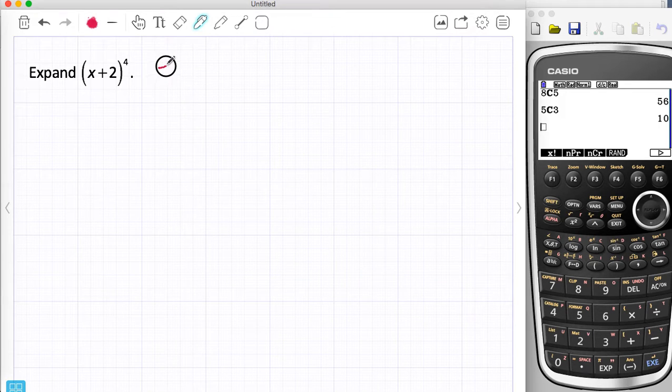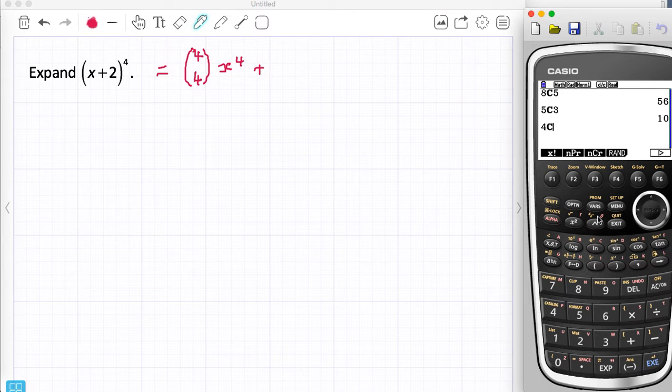So because I know that there's going to be, this is 4, there's going to be 5 terms. The first term is x to the power of 4. Now what I haven't put in there is actually you've got 4c4, and I'm taking the x power as that second number, the r number. Now 4c4 is just 1 anyway.